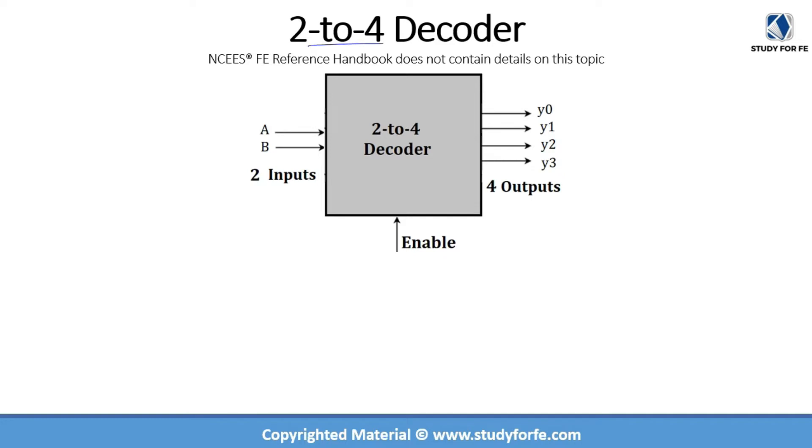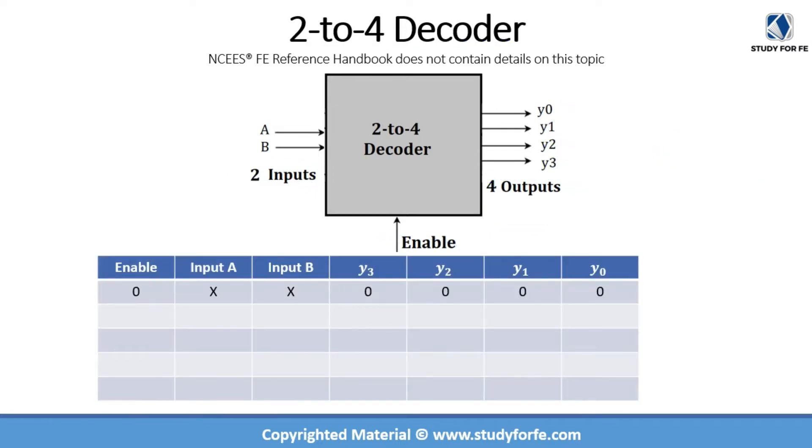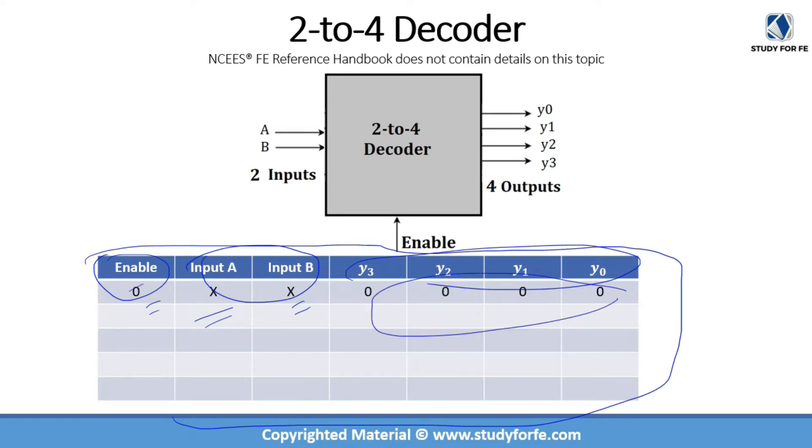2 to 4 decoder. So as I just mentioned, a 2 to 4 decoder will have two inputs and two raised to power n, which is equal to two raised to power two in this case, which is equal to four outputs plus the enable. The enable will basically decide whether the decoder is on or off. Depending on these inputs, we can select any of these outputs. So this is typically how the decoder's functionality and input-output relationship is expressed in the form of a truth table. When the enable is equal to zero, irrespective of the values of inputs A and B, the output will always be equal to zero because the decoder is off.